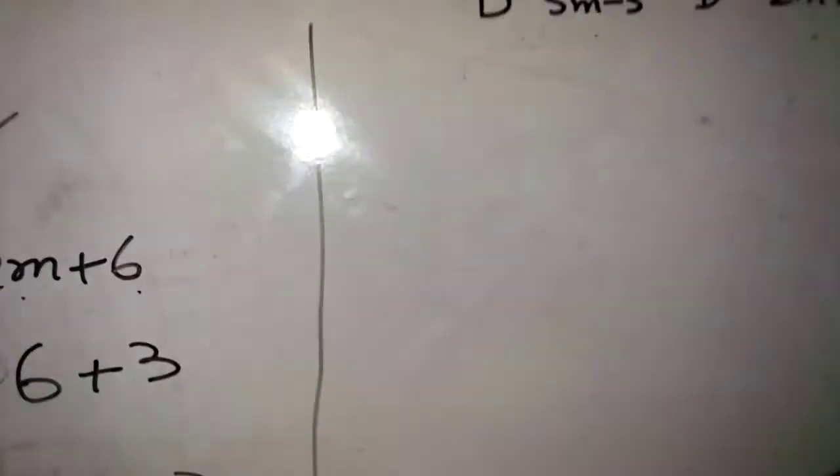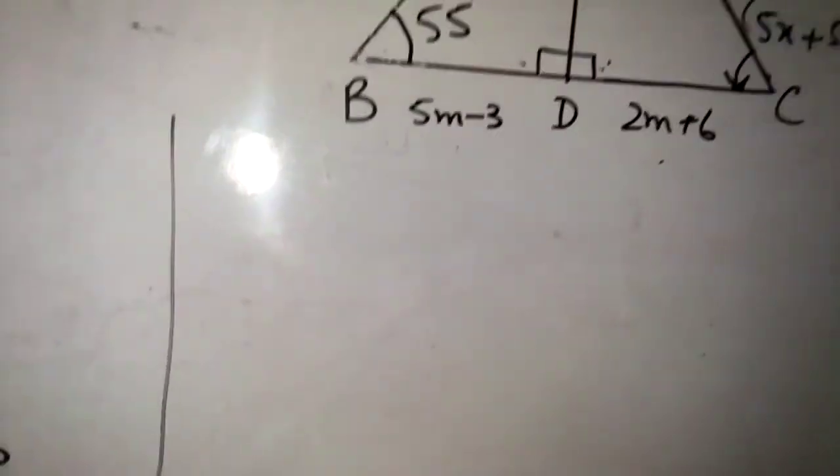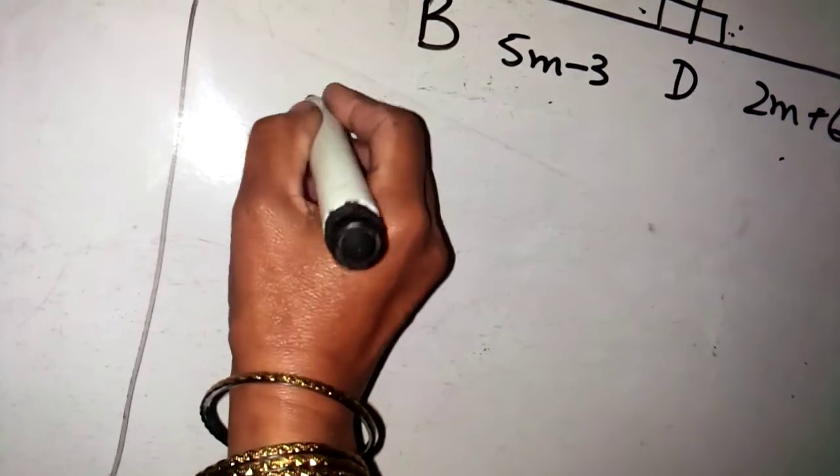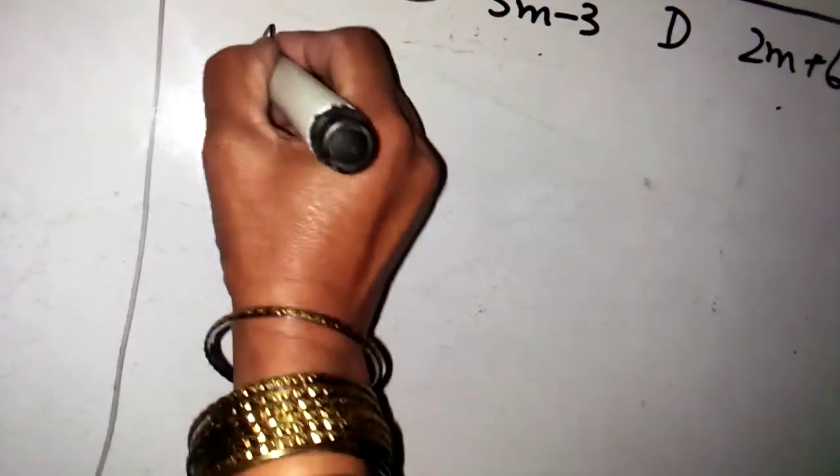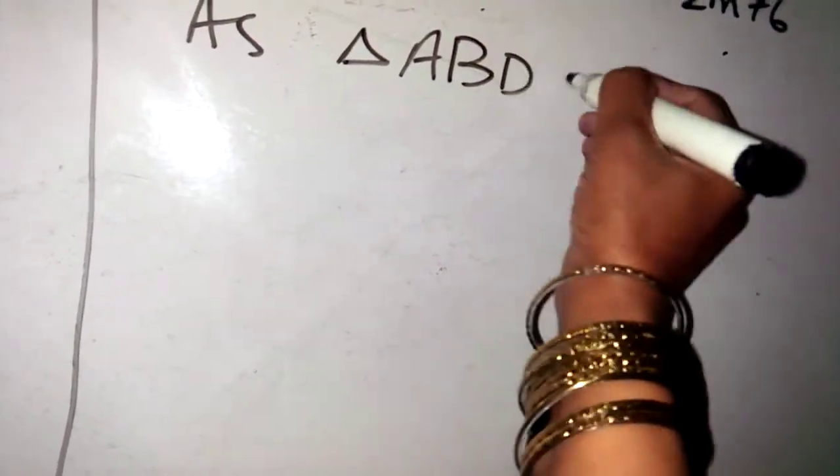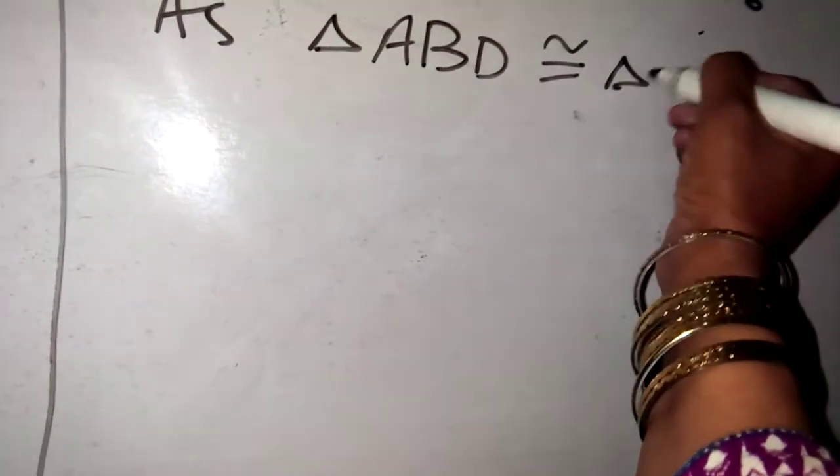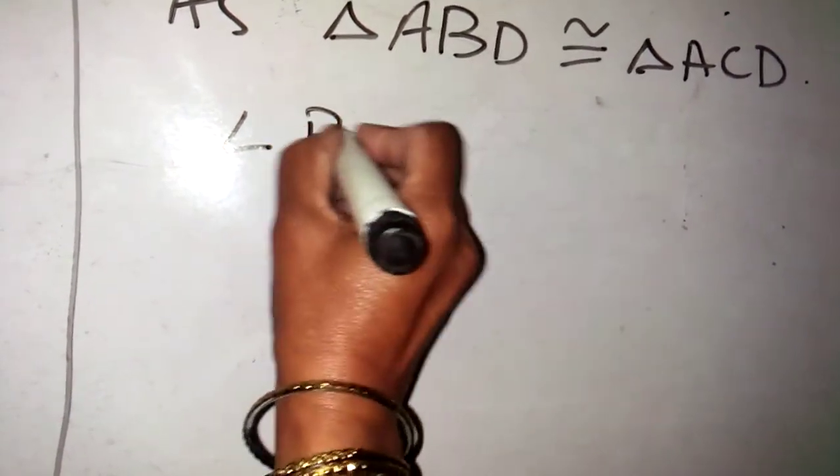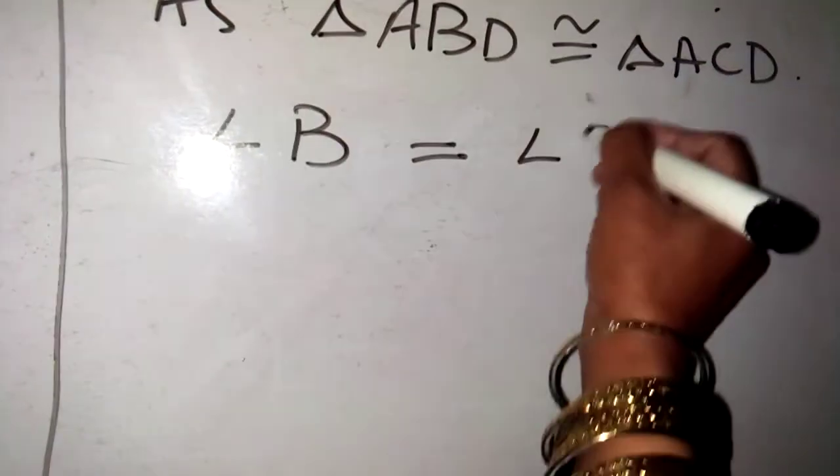Now we will find the other value of x. As both triangles are congruent, triangle ABD is congruent to triangle ACD, so angle B is congruent to angle C.